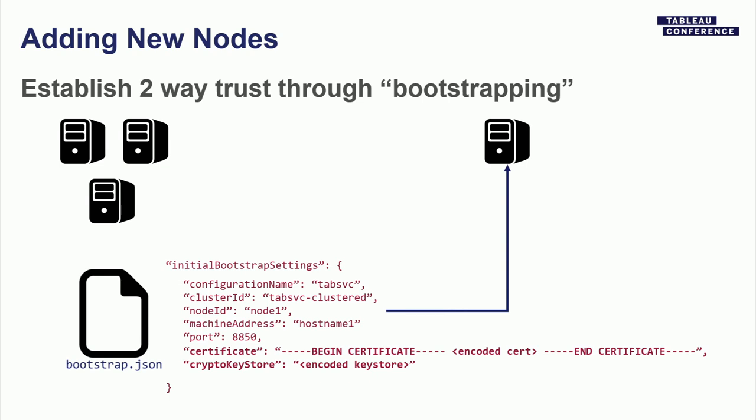Once you have that file, during the installer for the new node you will have an opportunity to provide this file. You must also provide your administrative credentials to the existing cluster — this is the second part of the two-way trust, going through the same administrative API as the TSM controller. Just like any other admin command, you have to authenticate and be authorized.